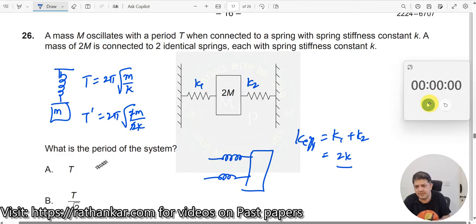I will substitute here. This two, this two goes away. So once again, I get this as 2π times square root of m by k, which is equal to the first one. So t dash is equal to t, which means the answer is A. Using this configuration also, you get the same time period.